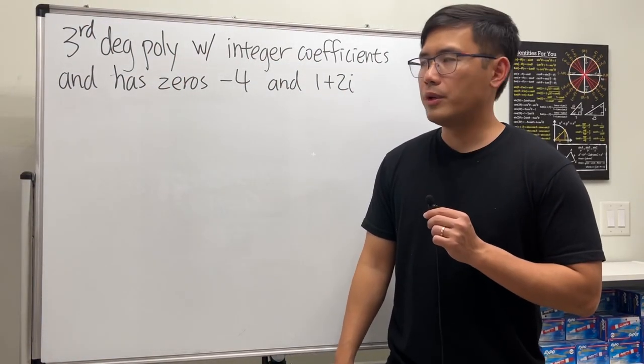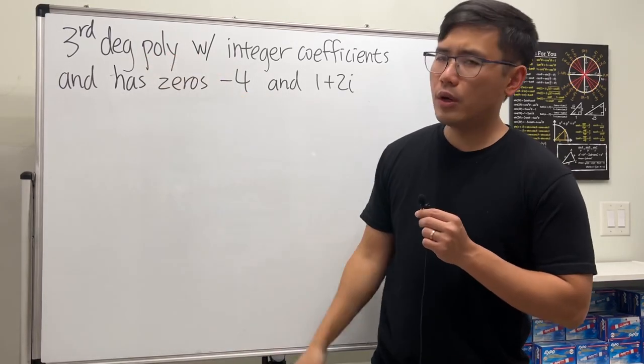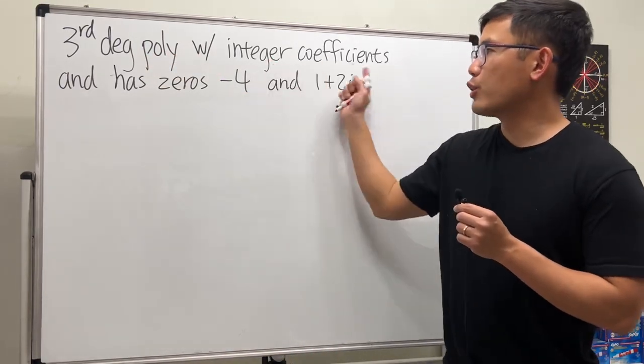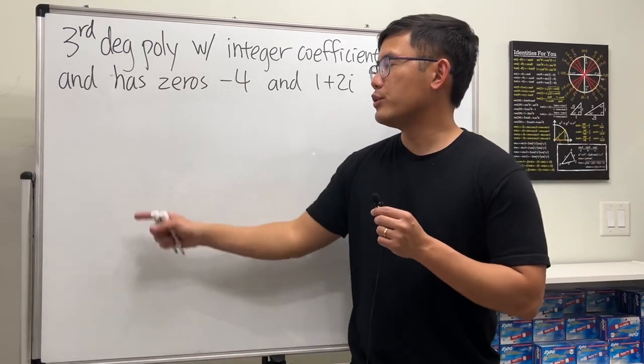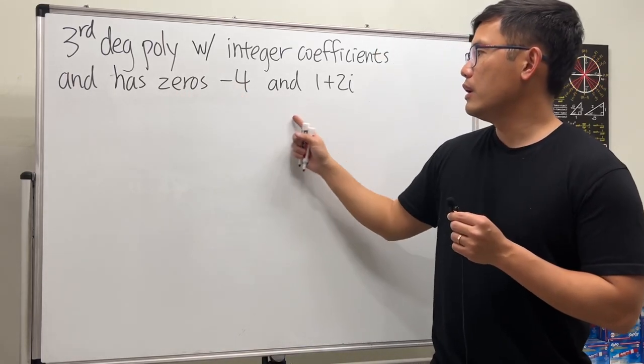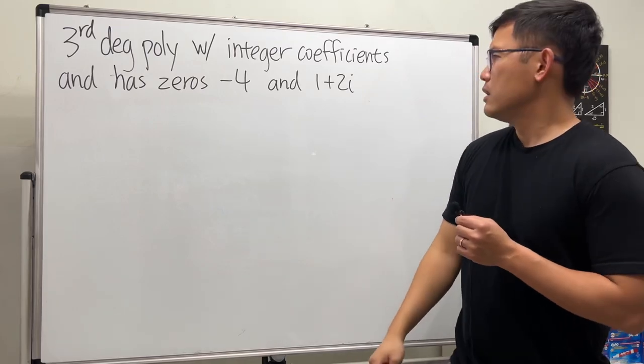Here we are going to find a cubic polynomial, a third degree polynomial, and we want it to have integer coefficients and zeros at -4 and 1+2i.